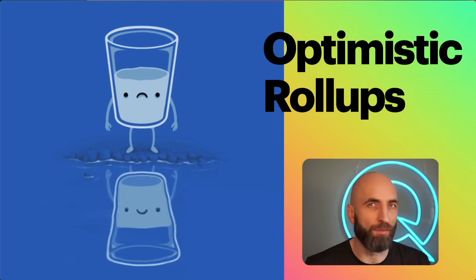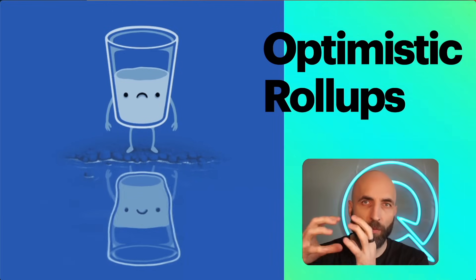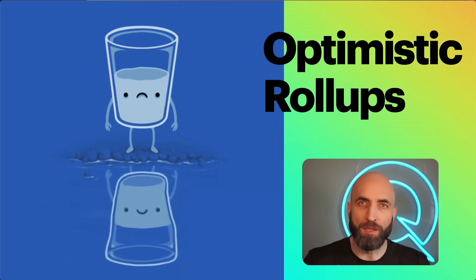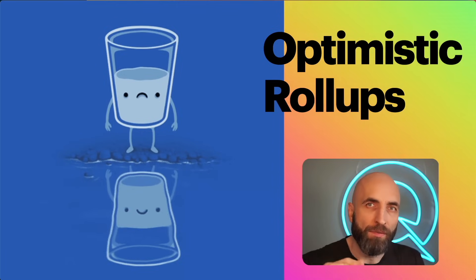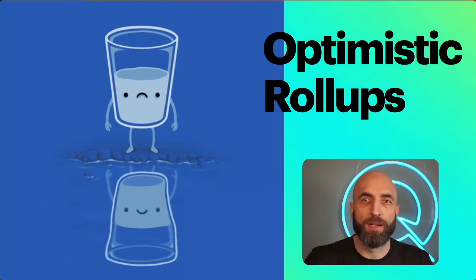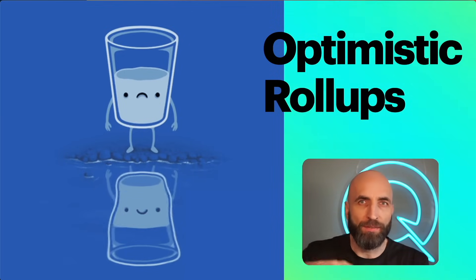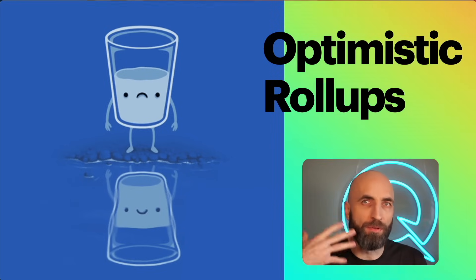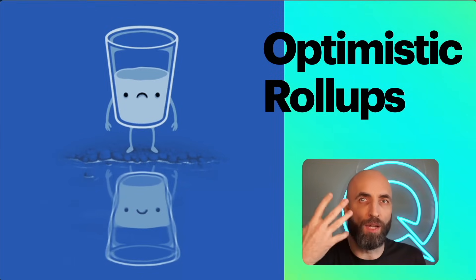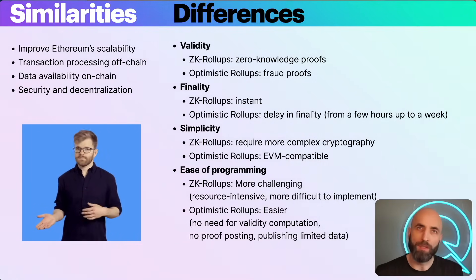Optimistic rollups, on the other hand, are like the eternal optimists of the blockchain world. They rely on a fraud-proof system that assumes transactions are valid until proven otherwise. When a batch of transactions is submitted to the main chain, it's optimistically assumed that the state update is valid. However, the network allows a challenge period during which any participant can dispute the rollup if they can provide a fraud proof. Optimistic rollups save time on validation because they don't do that upfront, but they allow a period where other network participants can perform that validation.